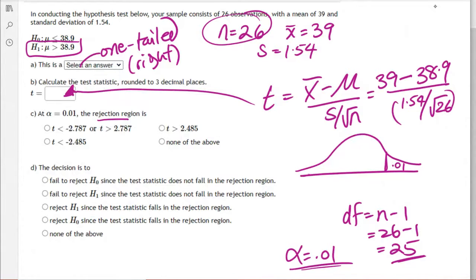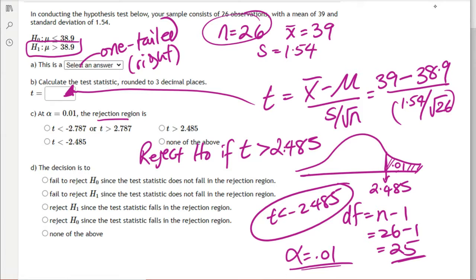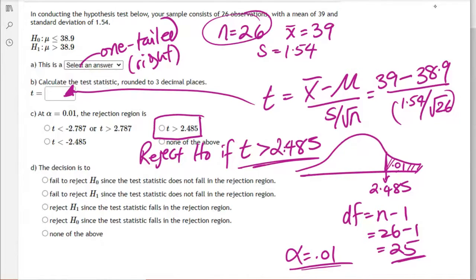This T value is 2.485. In essence, we are going to reject the null hypothesis if our test statistic T is greater than positive 2.485. If this were less than, it would have been T less than negative 2.485 if we're doing a less than test. But this is a greater than test, so it's going to be T greater than 2.485.